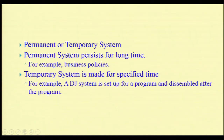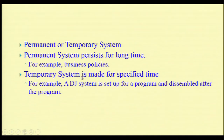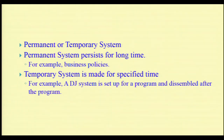A temporary system is made for a specified time. For example, a DJ system where a video jockey performs a program, and after completion of the program, he dismantles his equipment and moves out of the campus — such a system is called a temporary system. These are real basic examples which explain about the systems and the types of systems.